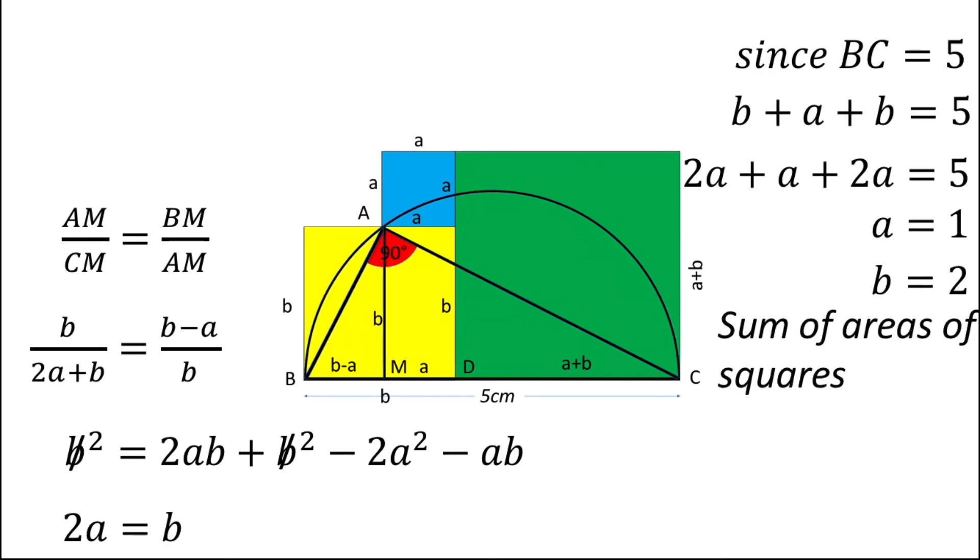Now simply we can find the sum of areas of squares. That will be equal to 1² plus 2² plus 3². So 1² plus 2² plus 3² will give you 14.